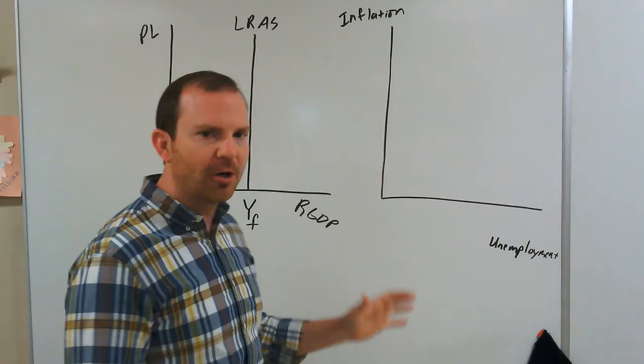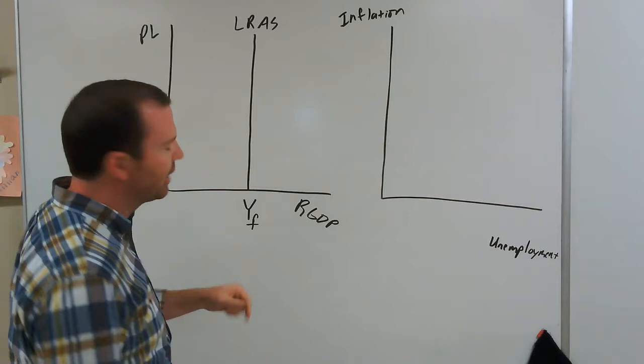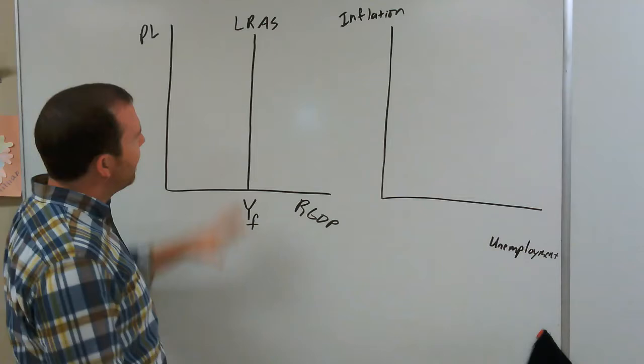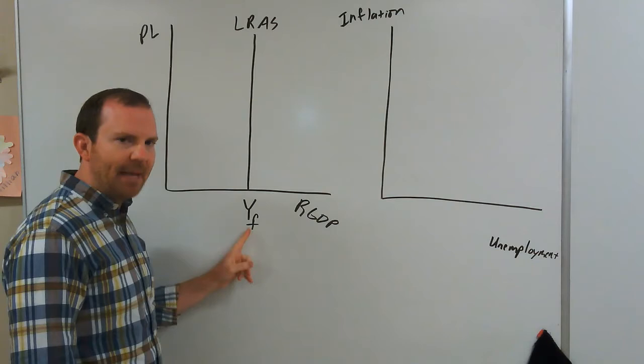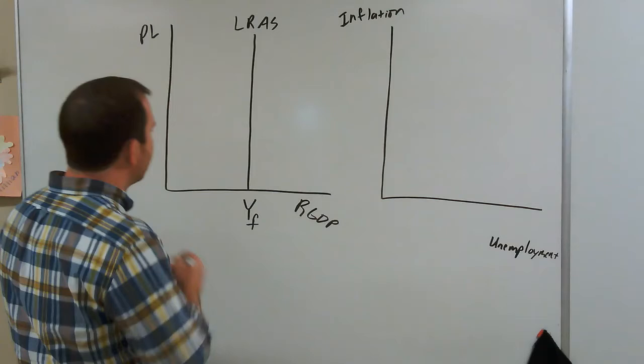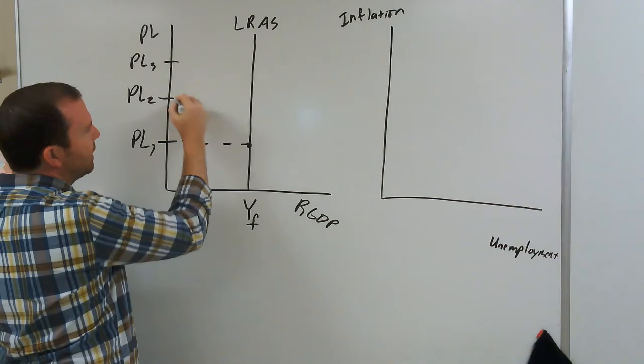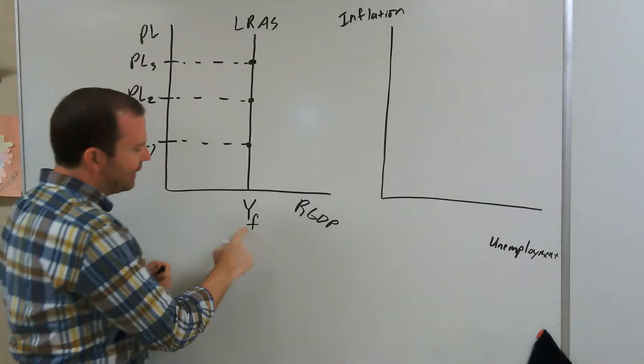First, I want to go back to the long-run aggregate supply curve. When we talk about long-run aggregate supply, we have this vertical line. It's vertical at full employment, at potential output, at maximum sustainable capacity. And our unemployment rate at this point is our natural rate — we're at full employment. In the long run, it doesn't matter where our price level is. No matter what our price level is, our output doesn't change. It stays exactly the same. So this price level has no impact on output in the long run.